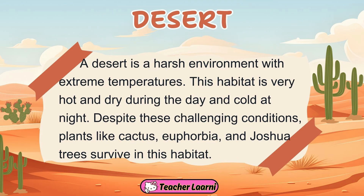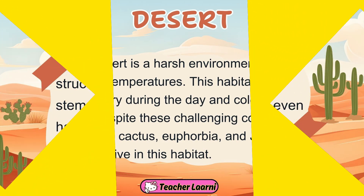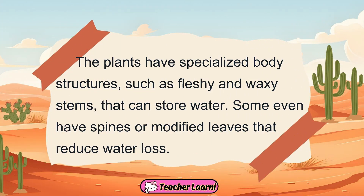A desert is a harsh environment with extreme temperatures. This habitat is very hot and dry during the day and cold at night. Despite these challenging conditions, plants like cactus, euphorbia, and joshua tree survive in this habitat. The plants in the desert have specialized body structures, such as fleshy and waxy stems, that can store water. Some even have spines or modified leaves that reduce water loss.